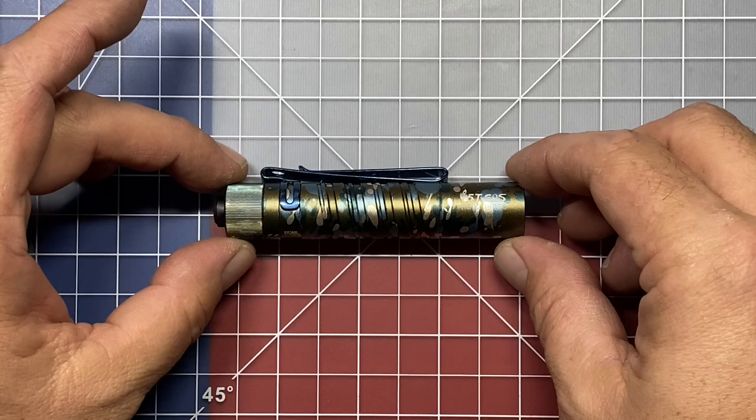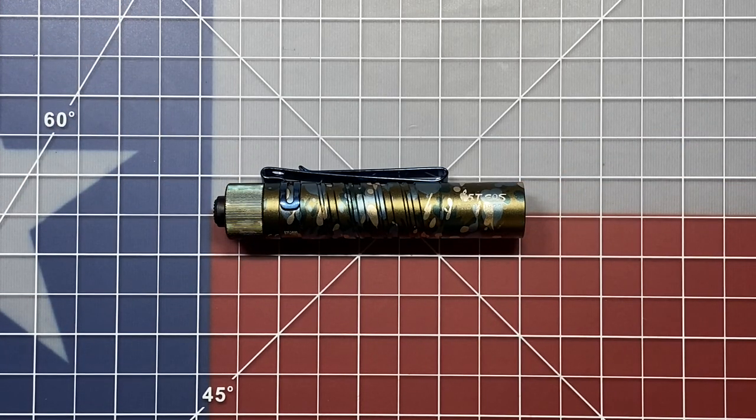Now they do have the regular black version. This is a light that they've had out for a little while and they've done several different models of this one. But this is my first time using it and I have been pretty impressed with the light output from this little AA battery flashlight. Let's get into the i5T EOS.